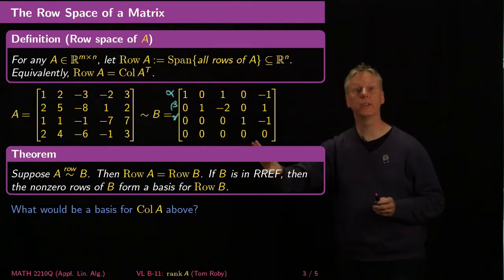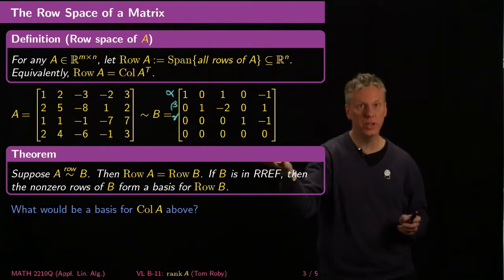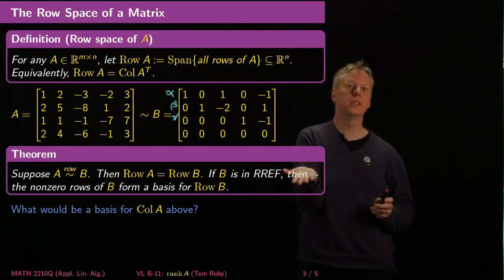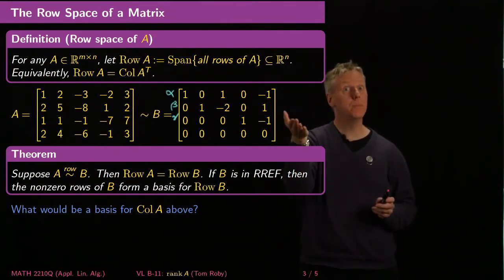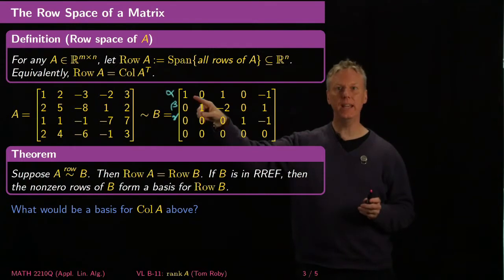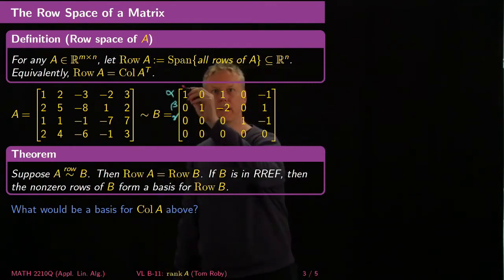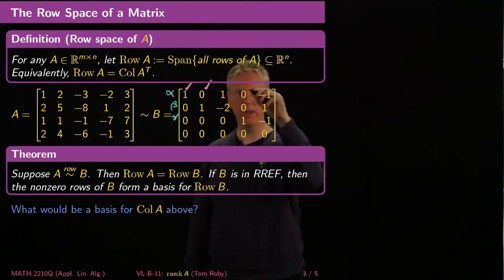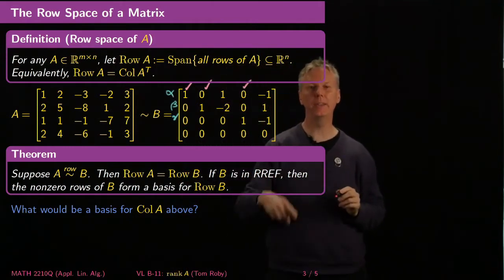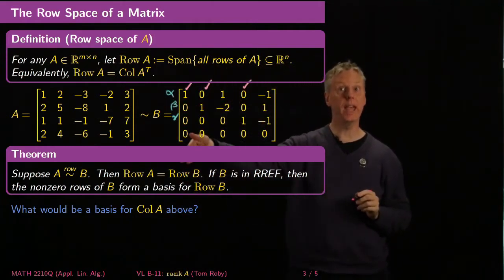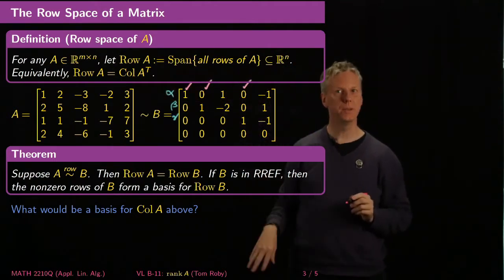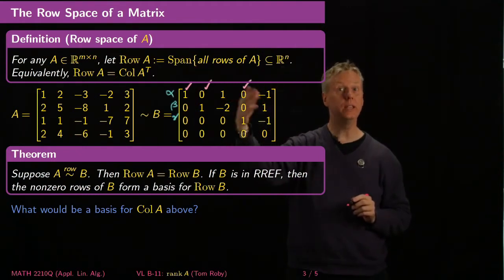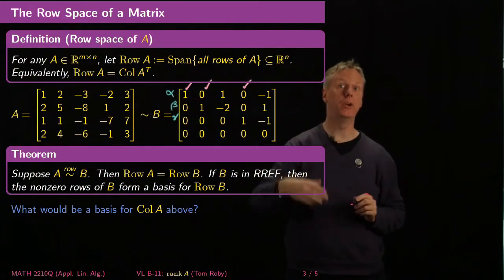So the column spaces of A and B are completely different. But what gets preserved by row operations is the set of homogeneous solutions, and that set of homogeneous solutions characterizes all of the linear dependence and independence relations. So it's easy to see that columns one, two, and four of B — the pivot columns — are linearly independent, by the same kind of argument, just viewed sideways. And the free variable columns are linear combinations of those pivot columns.